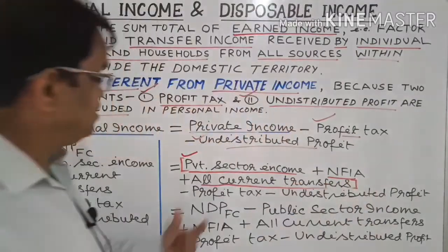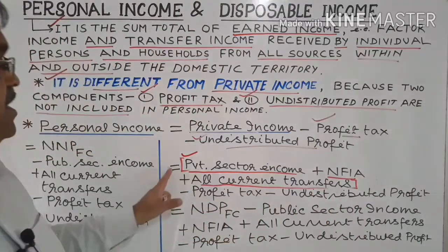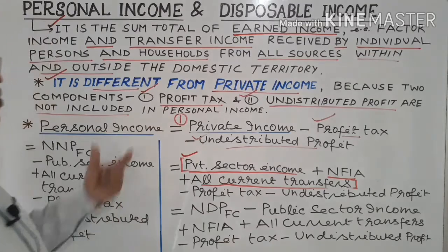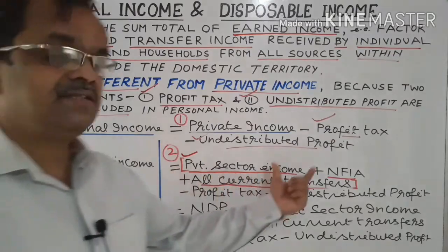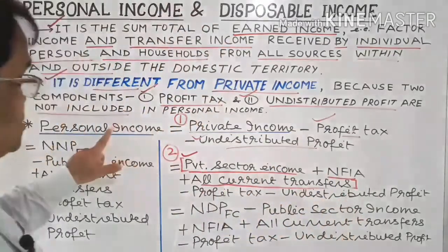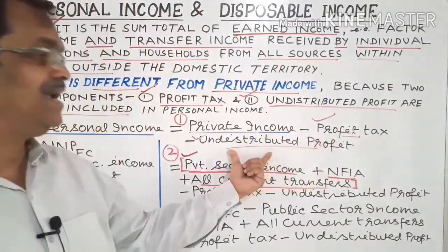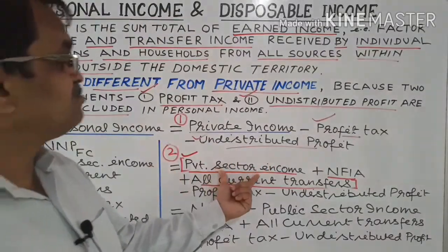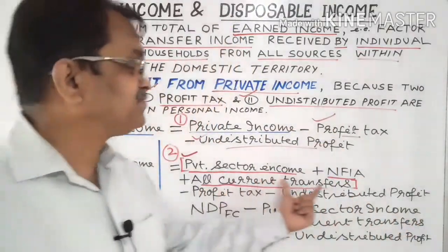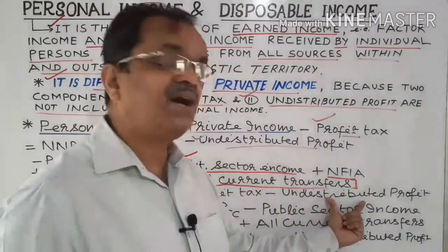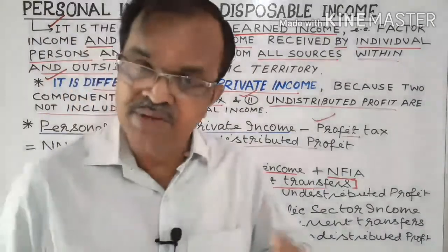So the second formula to calculate personal income is: private sector income plus net factor income from abroad plus all current transfer incomes, and then we deduct profit tax and undistributed profit from this sum total to again get personal income. That is the second formula.